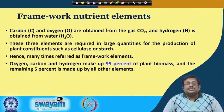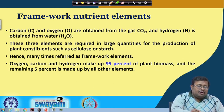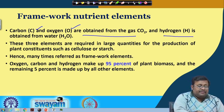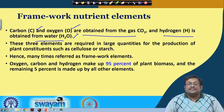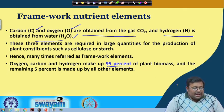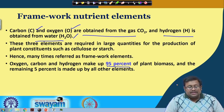The framework nutrient elements are carbon, oxygen, and hydrogen. Carbon and oxygen are obtained from gaseous carbon dioxide in the process of photosynthesis, while hydrogen is obtained from water also in the process of photosynthesis. These 3 elements — oxygen, carbon, and hydrogen — make up 95 percent of plant biomass, and the remaining 5 percent is made up by all other elements, which is why they are called framework elements.